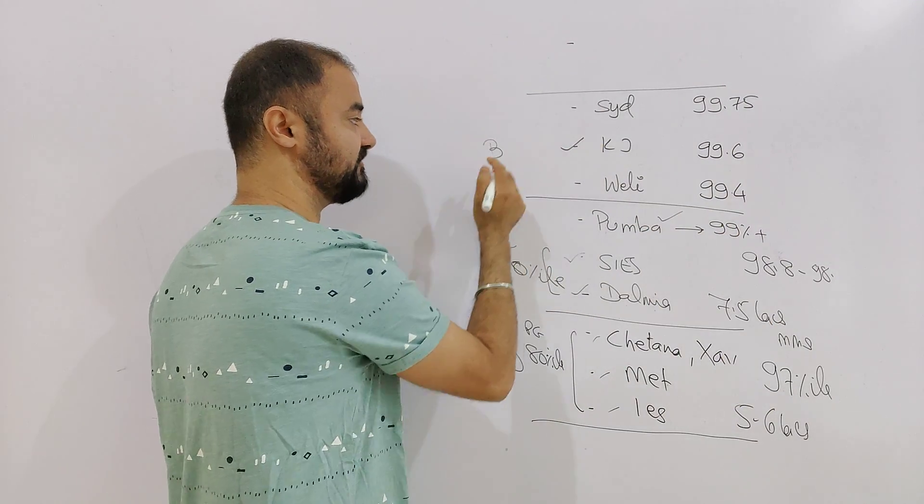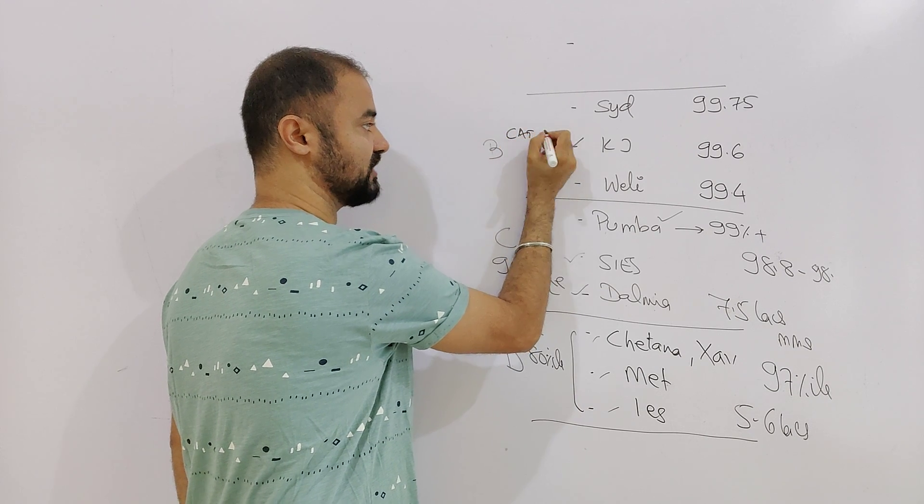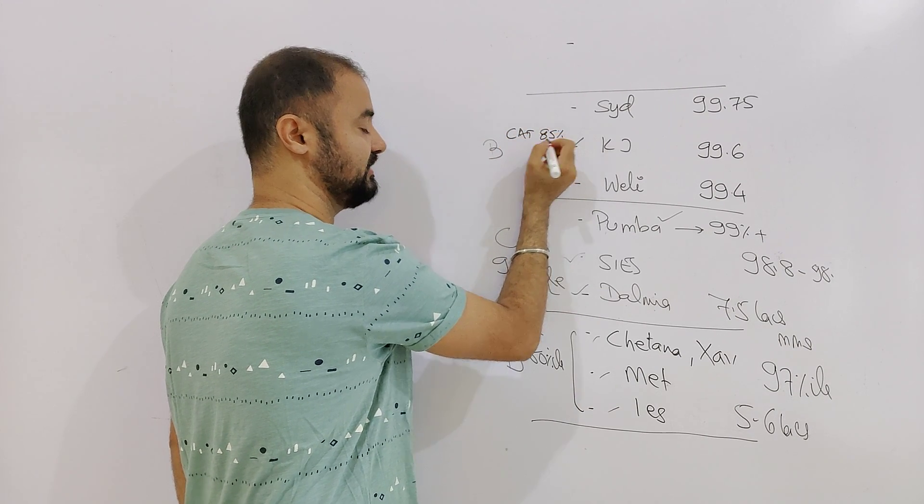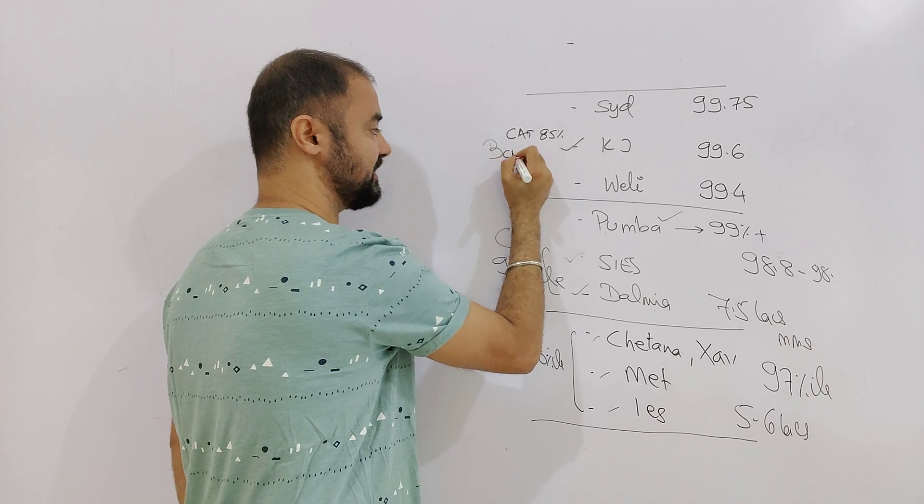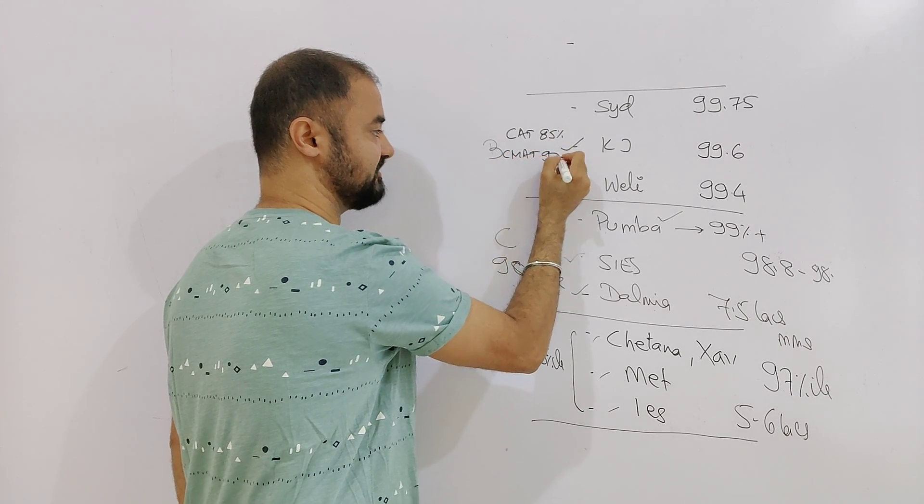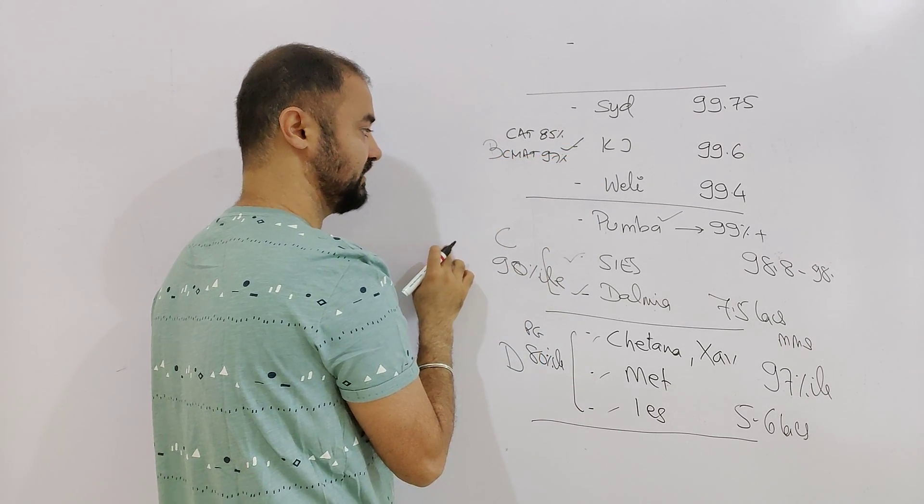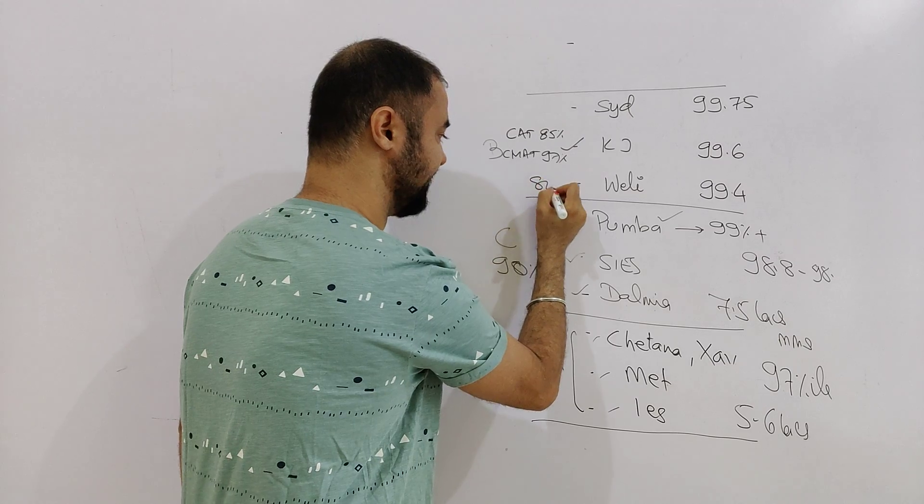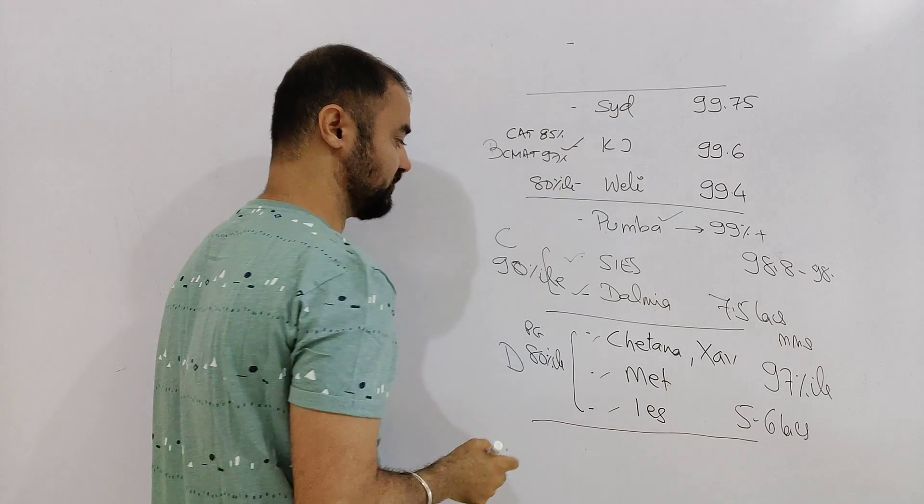Somaiya have a PGDM as well. For PGDM, they accept CAT score, cutoff 85 percentile. And CMAT score, cutoff 97 percentile for the PGDM.